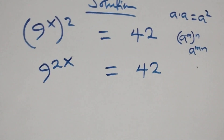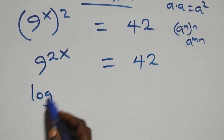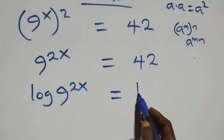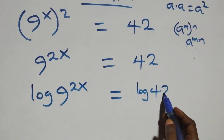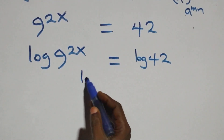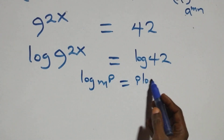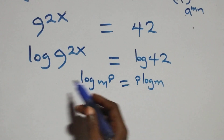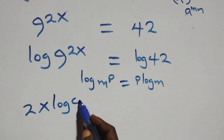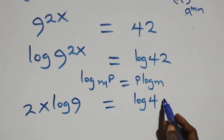The next step here, we take the log on both sides. That is, log of 9 raised to power 2x equals log 42. Then we apply the power law of logarithms: when we have log m raised to power p, this is the same thing as p log m. So what we have here becomes 2x log 9 equals log 42.